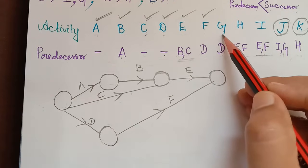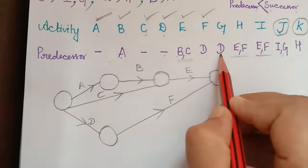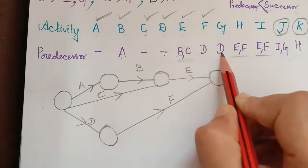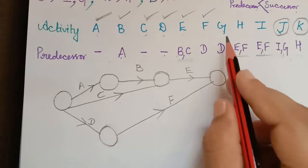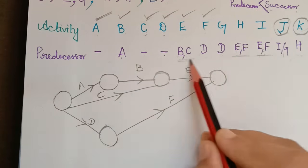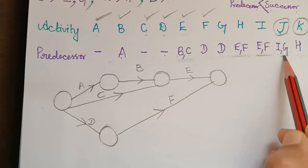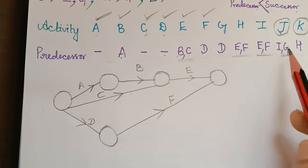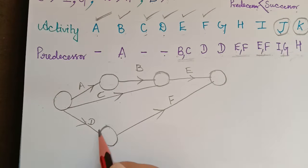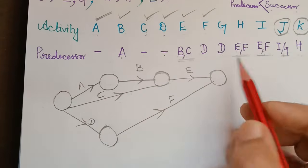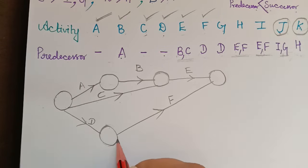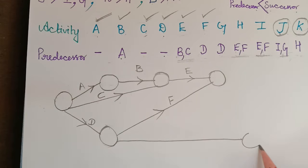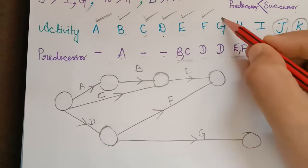Next is activity G. Its predecessor is D, so the starting point is D's end node. Checking the predecessor list, G appears with activity I, which has not been constructed yet. So we need not fix the ending node yet — we draw G from D's end node to a new node.